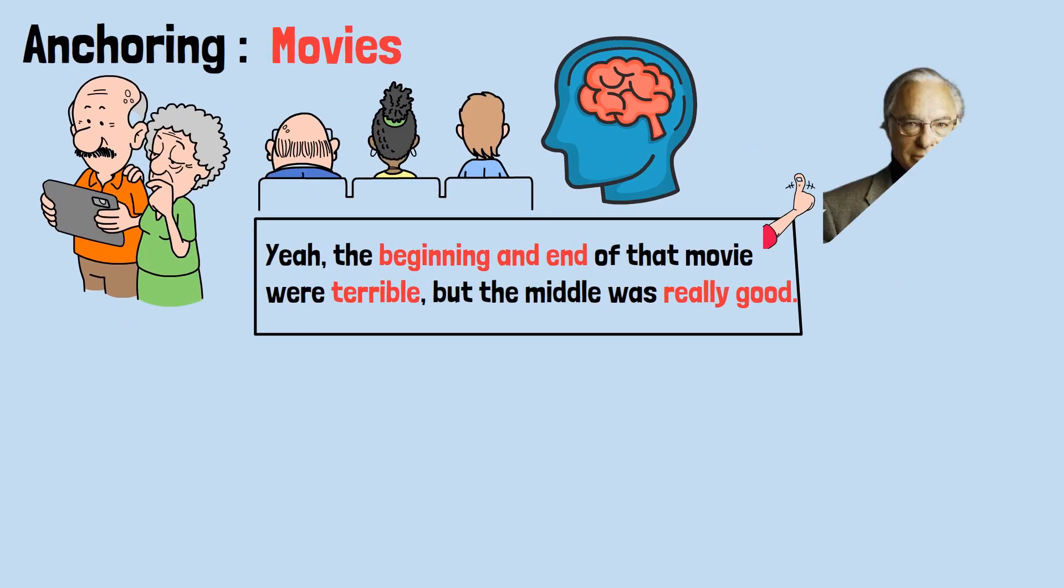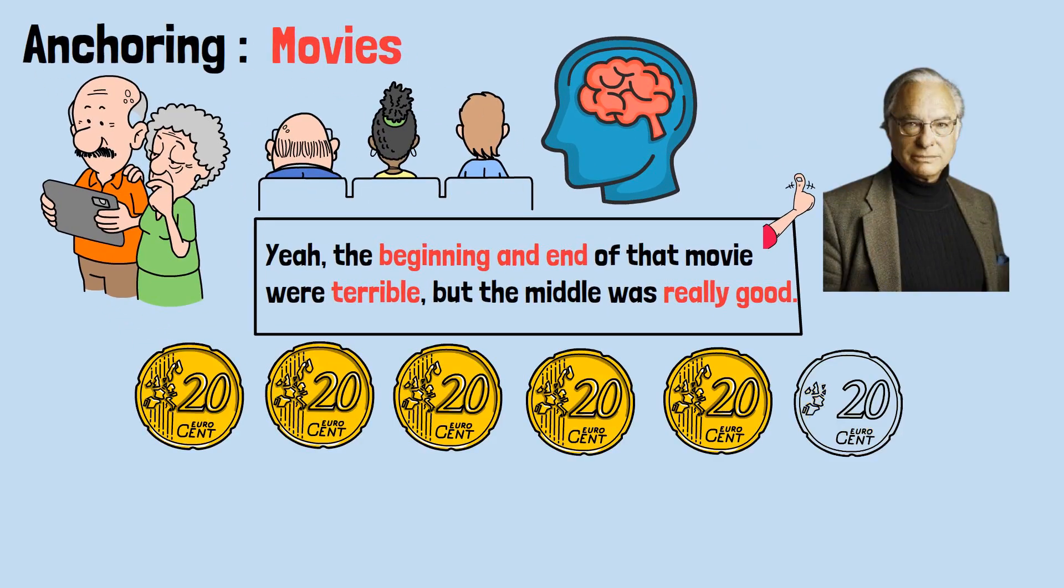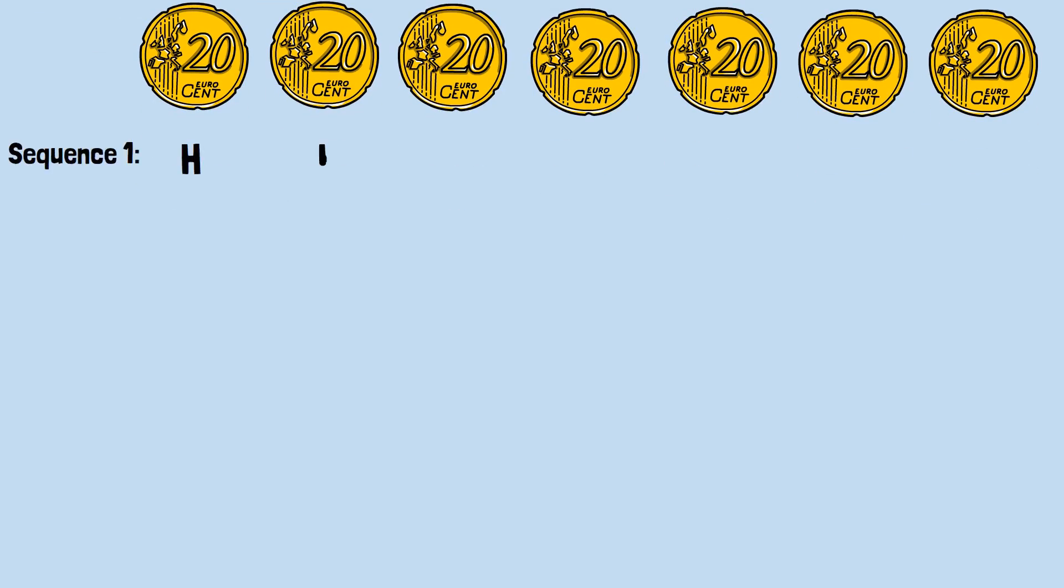Let's try another experiment. Massimo Piatelli-Palmarini flipped a coin seven times. The outcome was one of these three sequences. Sequence 1: Heads, heads, heads, heads, tails, tails, tails. Sequence 2: Tails, heads, heads, tails, heads, tails, heads.